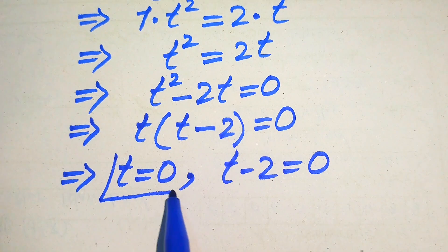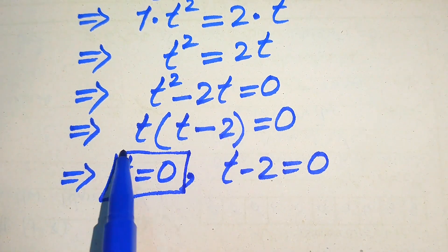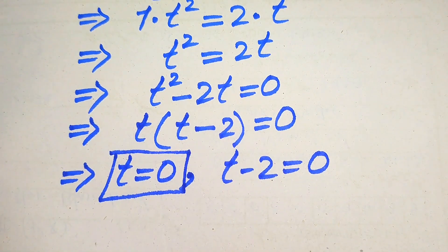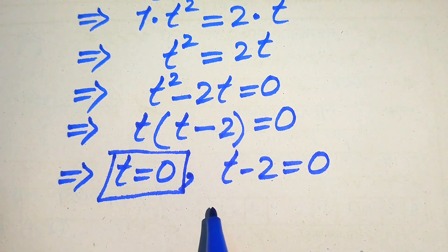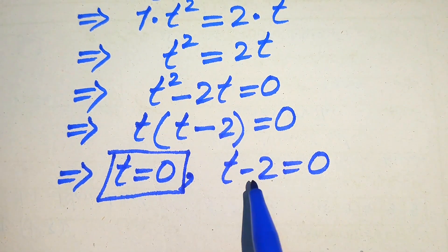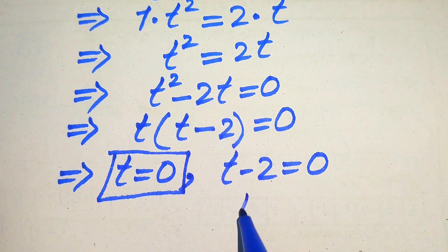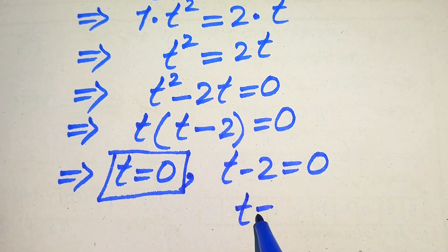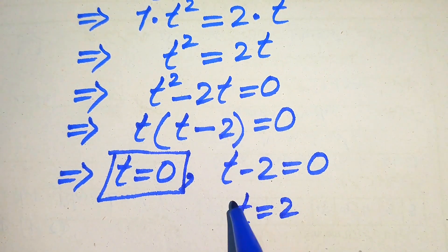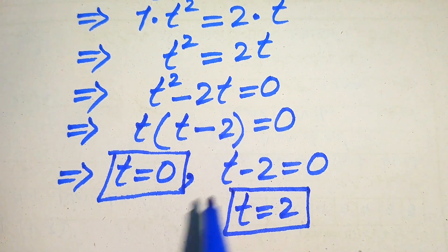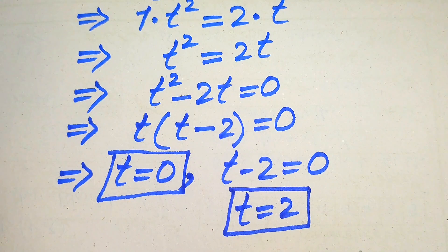Splitting into two cases: the first case gives t equals 0, and the second case is t minus 2 equals 0. Moving minus 2 to the right-hand side gives t equals 2. So our two roots are t equals 0 and t equals 2.